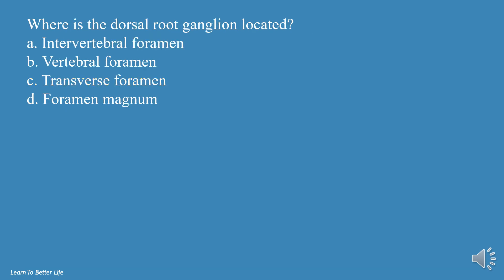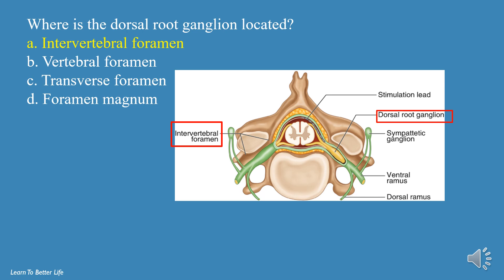Where is the dorsal root ganglion located? a. Intervertebral Foramen, b. Vertebral Foramen, c. Transverse Foramen, d. Foramen Magnum. The answer is a, Intervertebral Foramen.